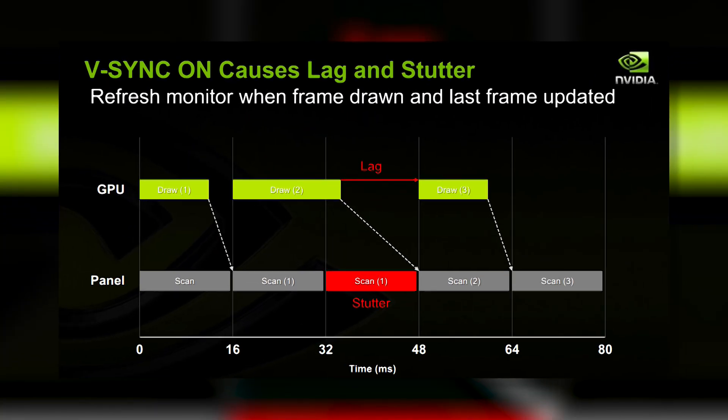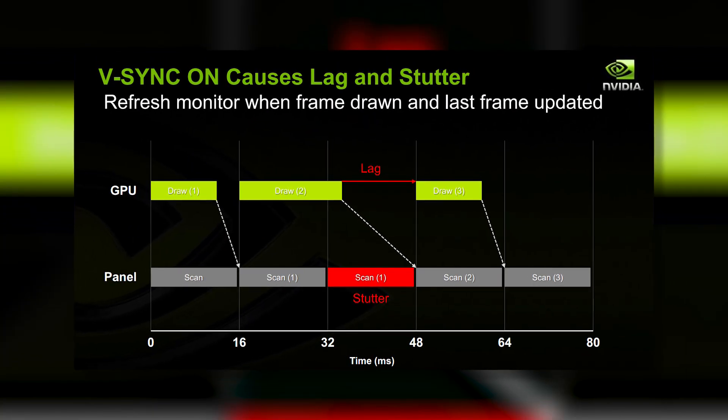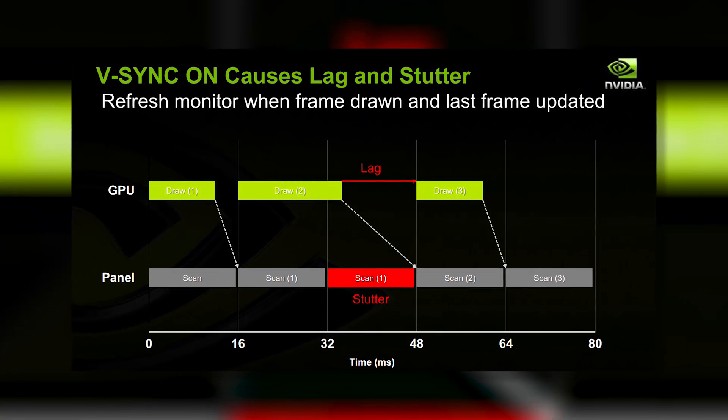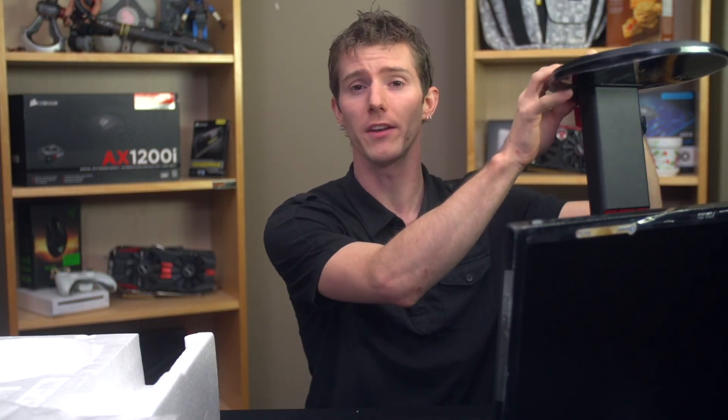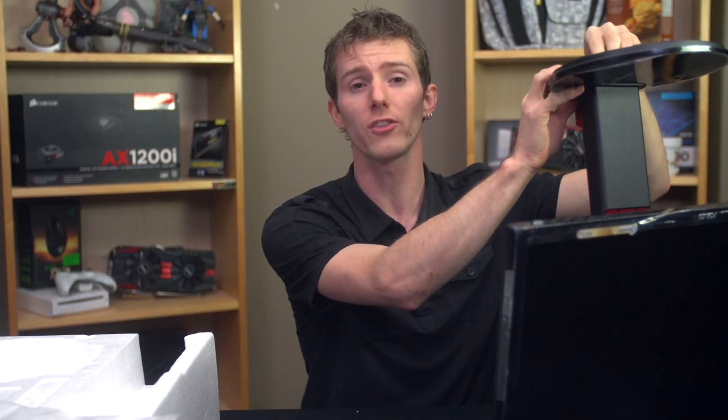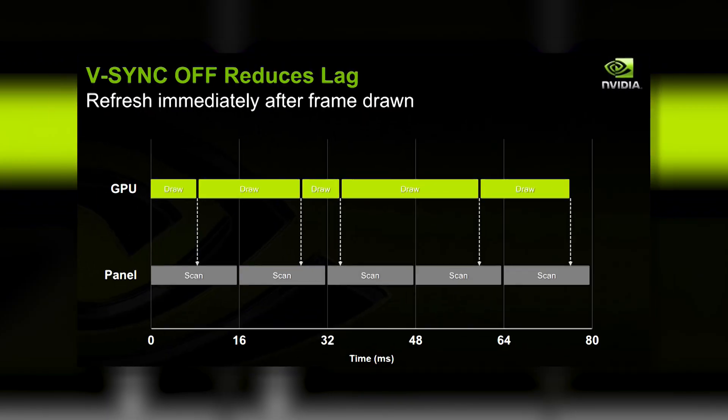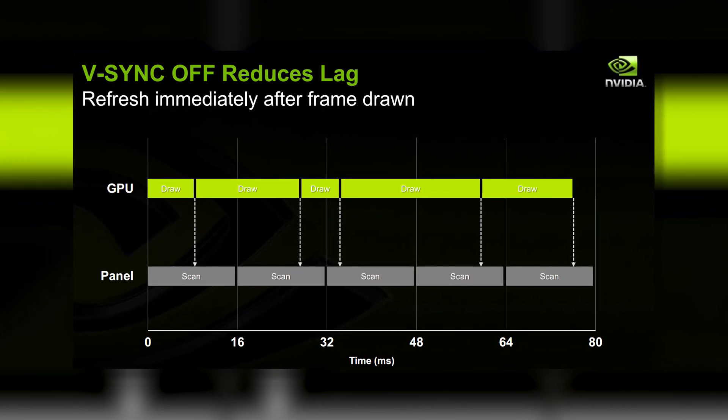On top of that, V-SYNC also introduces additional input lag, meaning the delay between when you move your mouse and when the image on screen reflects your movement is increased. Some game engines handle this better than others, but for example, I just plain couldn't play Left 4 Dead with V-SYNC on — it was just too laggy. So why not just turn V-SYNC off?